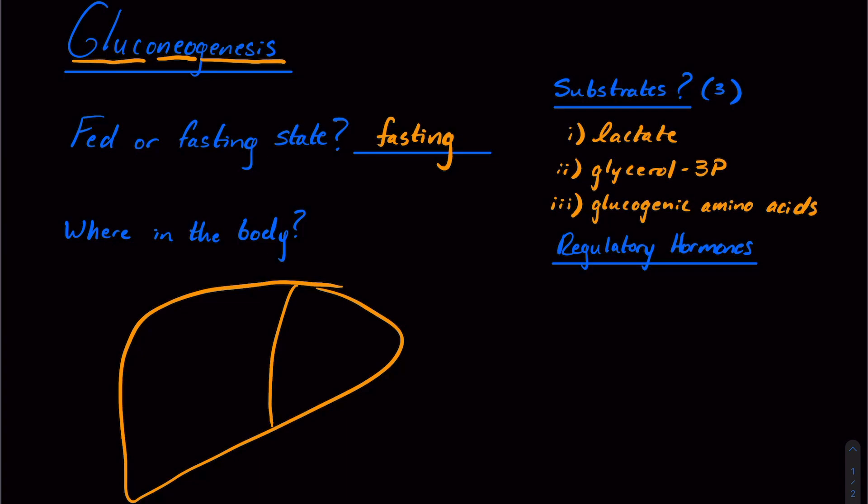And then we have to think about regulatory hormones. This ties in a lot to the fed or fasting state. So if we think about glucagon, which is produced by the alpha cells of our pancreas,